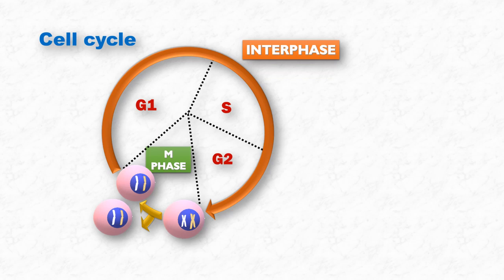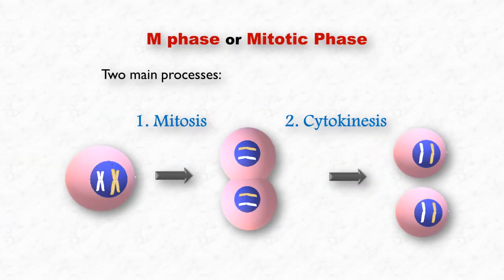This preparation involves two major events: the cell growth and duplication of its chromosomes. All this preparation takes place in the interphase of the cell cycle. Once the cell is ready, it enters the M phase.